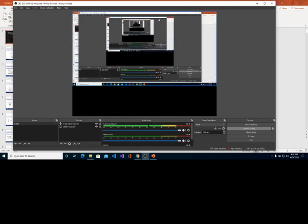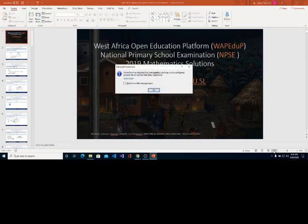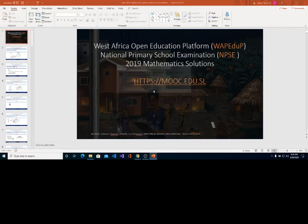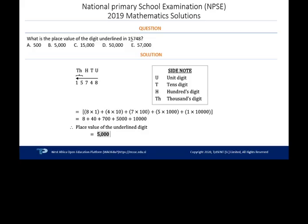I minimize that and go back to my PowerPoint. I click Slideshow, Start a Slideshow, then click OK. Now you can see my PowerPoint slideshow has started. I'll click the arrow key on my keyboard and it will take me to the first slide.